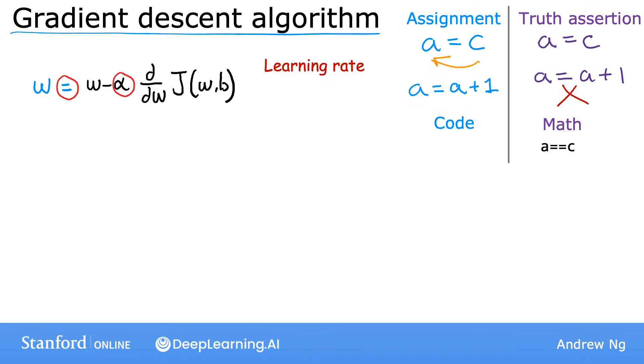What alpha does is, it basically controls how big of a step you take downhill. So if alpha is very large, then that corresponds to a very aggressive gradient descent procedure, where you're trying to take huge steps downhill. And if alpha is very small, then you'll be taking small baby steps downhill.